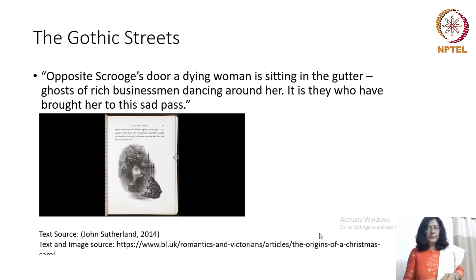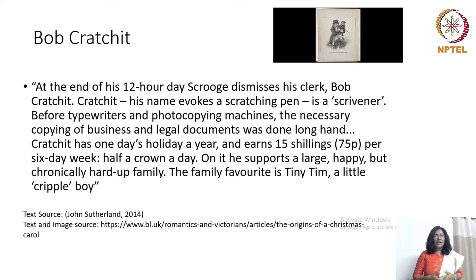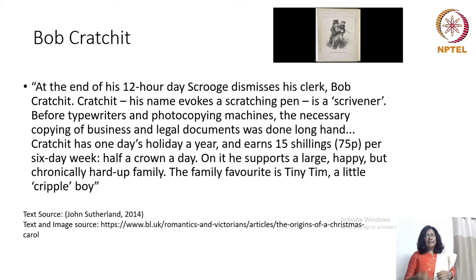The idea that charity can do a lot of good to the poor people in society is suggested time and again in this novella. You can once again see the Gothic overtones with the ghosts of businessmen prancing and dancing around this poor woman. At the end of his 12-hour day, Scrooge dismisses his clerk Bob Cratchit. Cratchit's name evokes a scratching pen — he is a scrivener. Before typewriters and photocopying machines, the necessary copying of business and legal documents was done longhand. Cratchit has one day's holiday a year and earns 15 shillings, 75 pence per six-day week — half a crown a day.